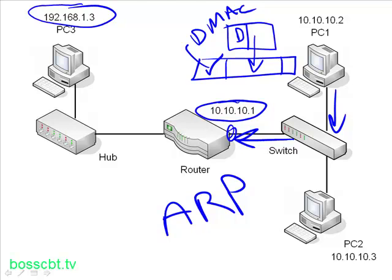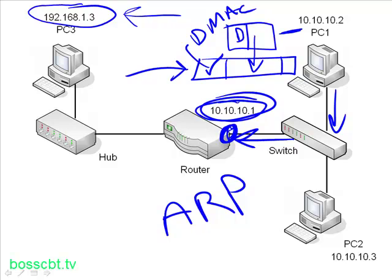PC1 fills in the destination MAC address using the router's MAC address, creates the frame, sends it onto the network, and it is sent to the router. Keep in mind: in the IP packet, we have the destination IP address of PC3, but in the Ethernet frame, we're using the MAC address of the default gateway — the router's interface. The hop-by-hop delivery uses Ethernet addresses, while the logical layer 3 IP addressing remains pointed at the final destination. The router strips off the Ethernet frame, examines the destination IP address, looks in its route table, and creates a new Ethernet frame using PC3's MAC address to send it on its way.